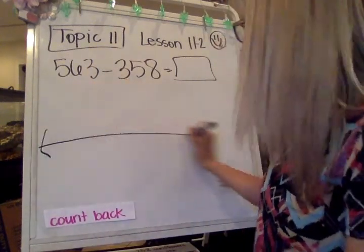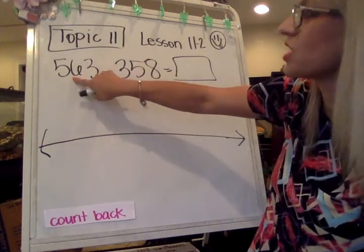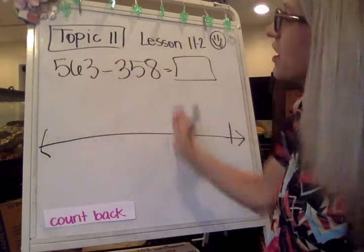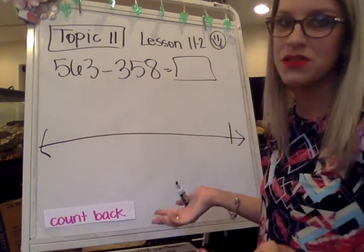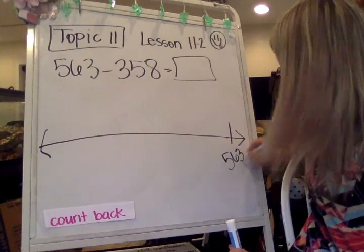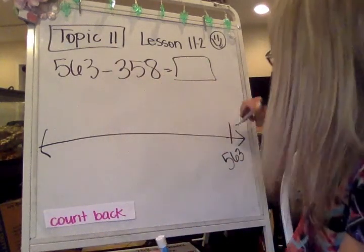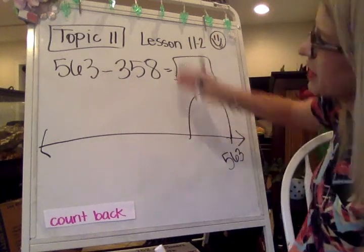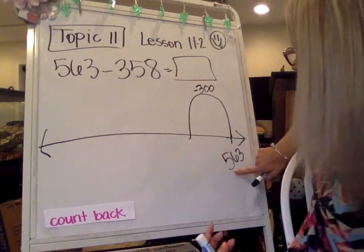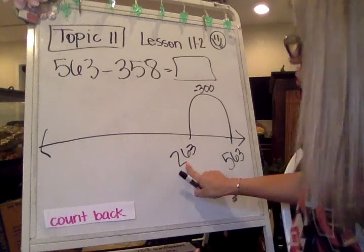So with counting back, it's a little bit different. With the counting on, we started with the 358. With the counting back, we're going to start with the larger number, the 563, because we're going to be doing some subtracting. So we're going to subtract the 300, the 50, and the 8 from this number here, and it's going to tell us what the answer is. We're starting with the 563, and then we're going to count back 300s. So remember, you can do minus 100, minus 100, minus 100 three times. But for me, we're going to just do the minus 300 with one big swoop. So five hundreds minus three hundreds is two in my hundreds. And then I'm going to keep the 63 the same. So 263.